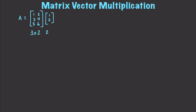So if we have a 3×2 matrix, that means we have to have a matching 2×1. This of course means that our resultant matrix is going to be a 3×1 matrix. If we come in here and perform these calculations, we will get 1×1 + 2×2, 3×1 + 4×2, and 5×1 + 6×2, and that gives us a final matrix of 5, 11, and 17.